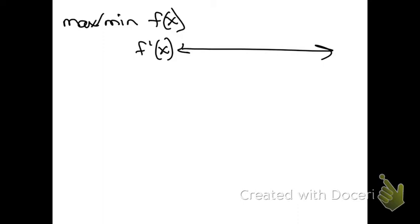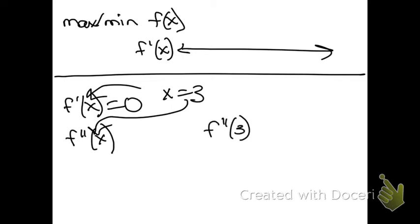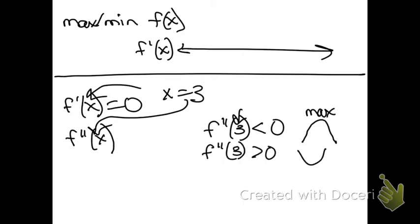Yesterday we learned the second derivative test. That's where you find your critical points the same way, but you can only use the ones where the derivative is zero — not where the derivative is undefined. And then if the second derivative is easy to find, you take those critical points and plug them into the second derivative. If the second derivative at that critical point is negative, that means concave down, meaning that point is a max. If the second derivative is positive, that means concave up and that critical point is a min. Pretty much use the second derivative test only if the second derivative is quick and easy to find, or if told to.